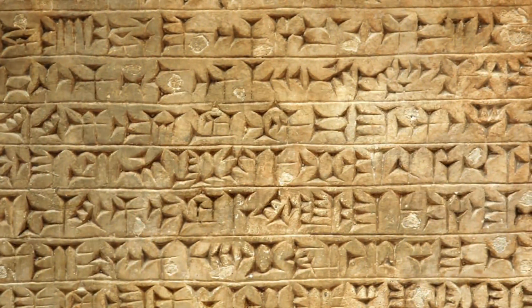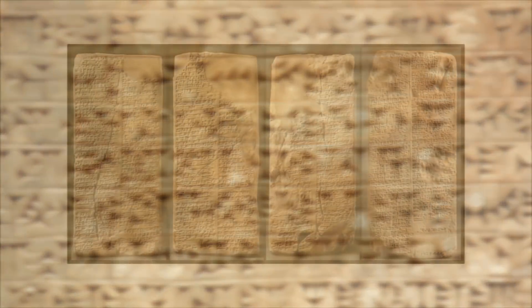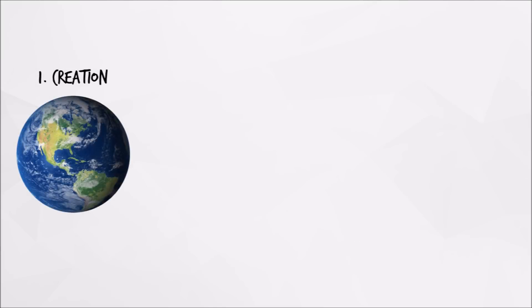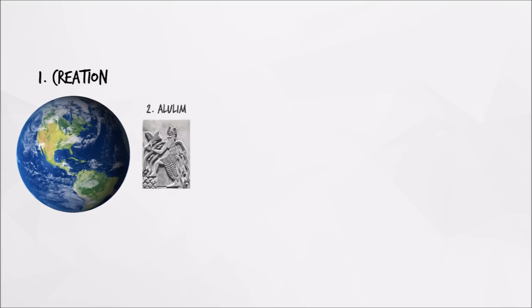To begin with, the Sumerian civilization, throughout their existence, created a list of their kings, ranging from ancient rulers to ones that held power shortly before Sumer's downfall. The earliest kings on the list, like the first ruler Allulim, were stated to have governed for thousands of years each. The Sumerians believed that the earth was created and then Allulim took power shortly after.